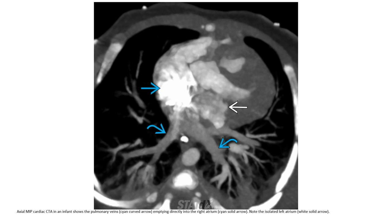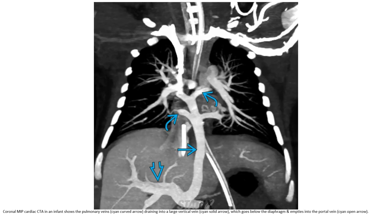This is the CTA of a patient with cardiac Type 2 TAPVR, showing pulmonary veins emptying directly into the right atrium, not the left atrium. Another CTA demonstrates the pulmonary vein draining into a large vertical vein, which goes below the diaphragm and empties into the portal vein.